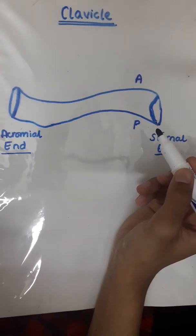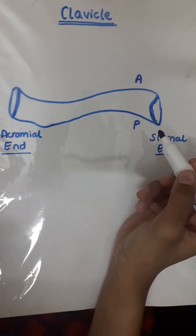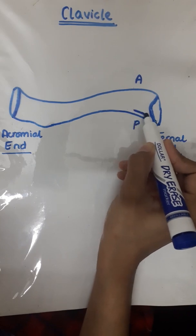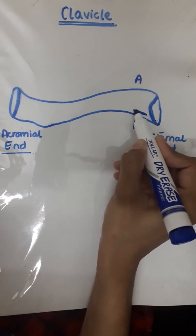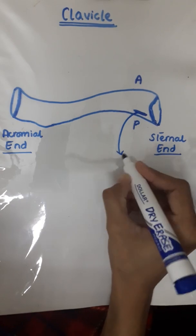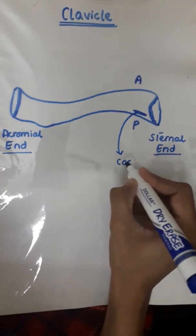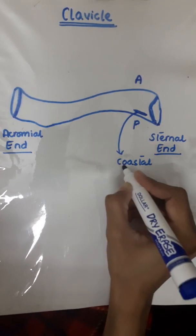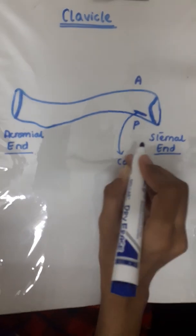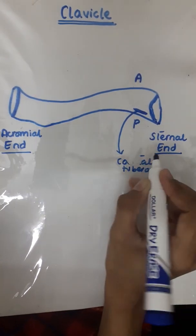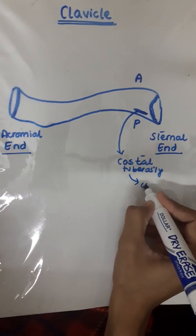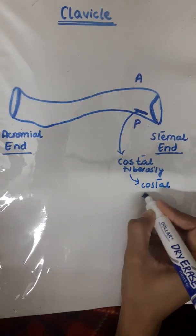At the sternal end, inferiorly, we have the costal tuberosity, which provides attachment for the costal ligament.